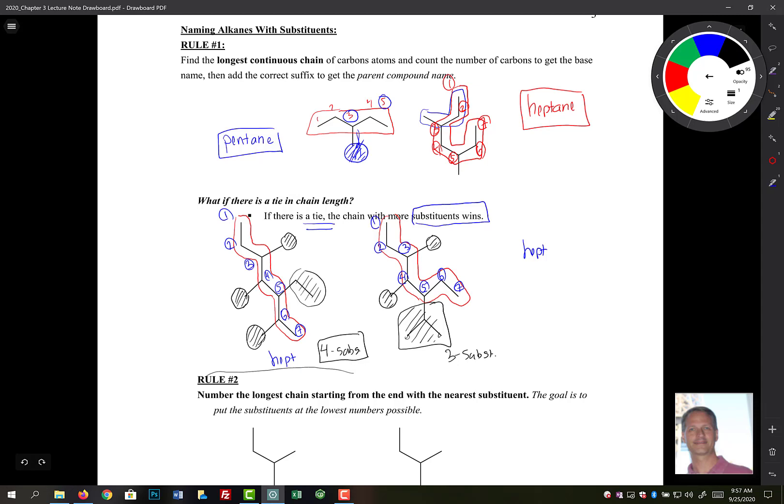So in that case, what it means is that we want to use this numbering for our parent, as far as our backbone is concerned. That's our parent chain there. So again, rule number one, find the longest carbon chain.